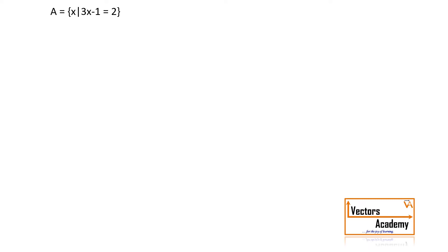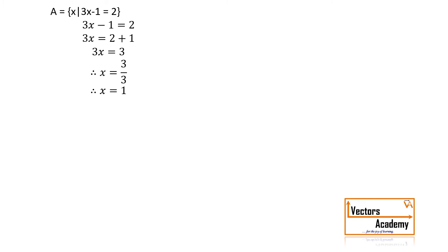The equation is 3x - 1 = 2. If we take -1 to the right hand side it becomes +1, so we get 3x = 3. Since 3 is multiplied on the left hand side, bringing it to the right hand side gives division, hence the value of x is 1. So set A contains the element 1. As A contains just one element, this type of set is called a singleton set.